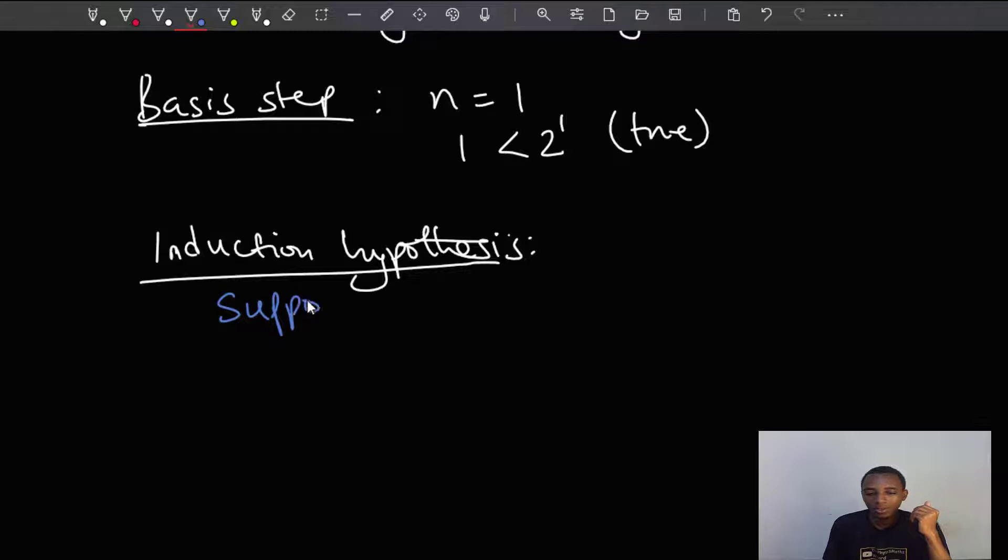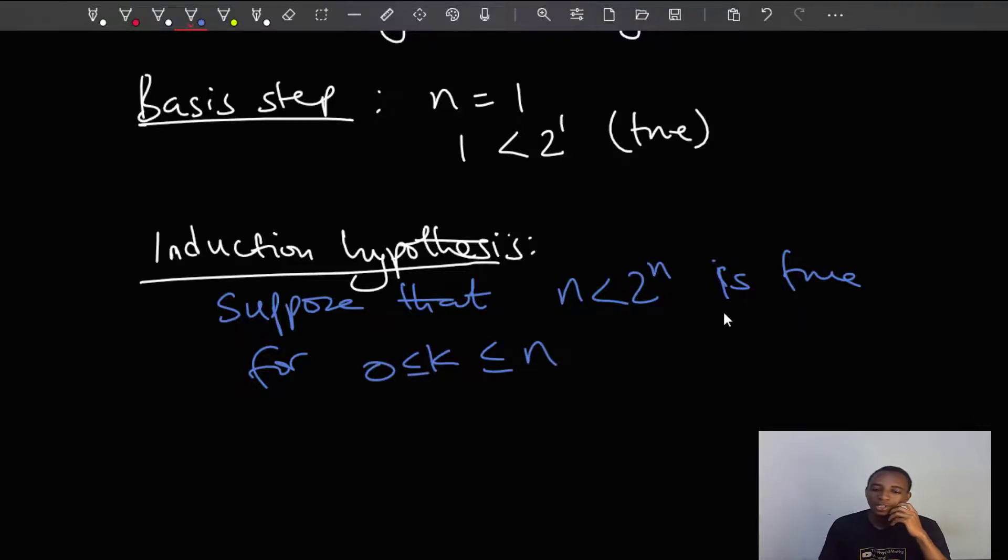suppose that the proposition n is less than 2 to the power n, for all non-negative integers, is true for, let's choose some value k, and that value k should be between 0 and n.